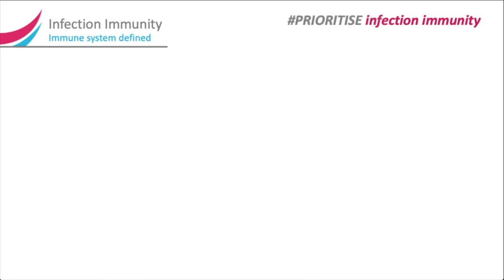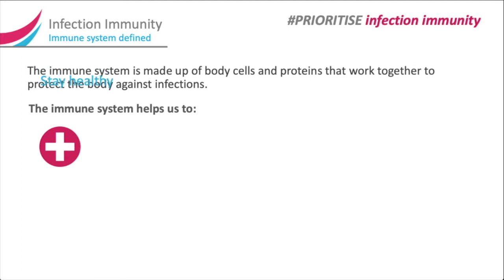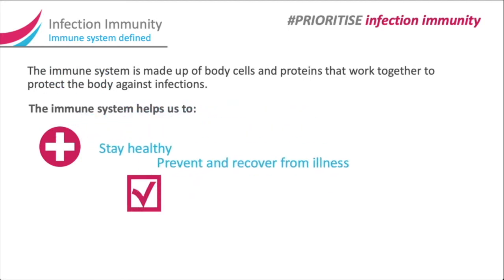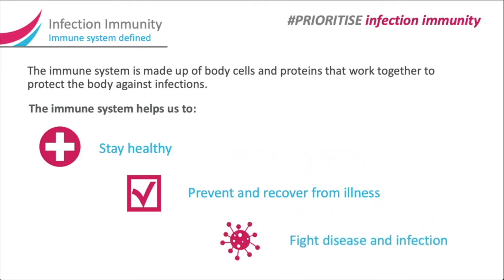Infection Immunity — immune system defined. The immune system is made up of body cells and proteins that work together to protect the body against infections. The immune system helps us to stay healthy, prevent and recover from illness, and fight disease and infection.